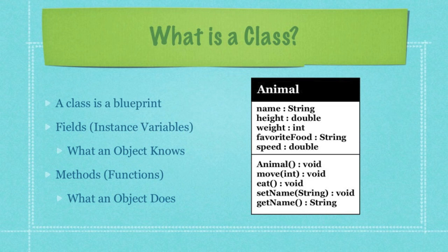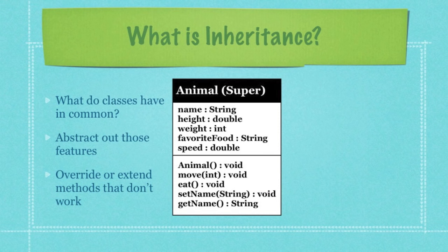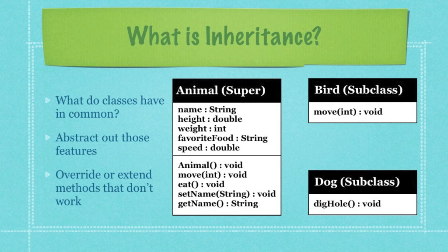If you've followed any of my other tutorials and you have any interest in Java at all — which is going to be our chosen language for analyzing design patterns — you of course create a class. That class is made up of fields or instance variables, and these are all the things that the object knows about itself. It also defines all the methods or functions that this object is going to need, or in other words, what this object is going to do. Whenever you are going to be creating super classes like animal, as well as sub classes like bird and dog, you figure out what things are similar between all these sub classes and then you abstract out those features into the super class.